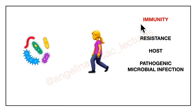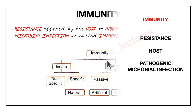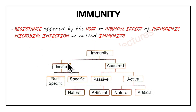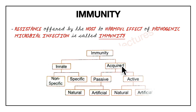Immunity is the resistance offered by the host to the harmful effects of pathogenic microbial infection. Immunity is further classified into innate immunity and acquired immunity. Innate immunity is the one that is present since birth, whereas acquired is the one that we obtain during our lifetime. Innate immunity is further divided into non-specific and specific immunity, whereas acquired is further divided into passive and active immunity.